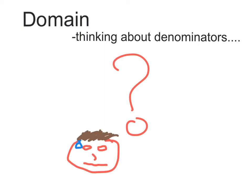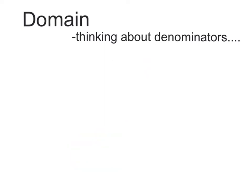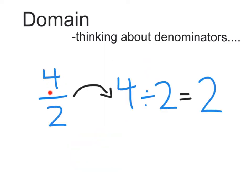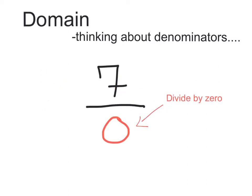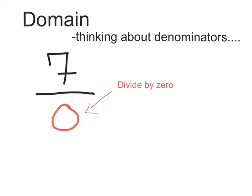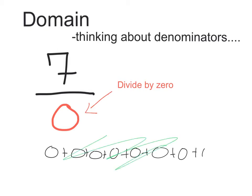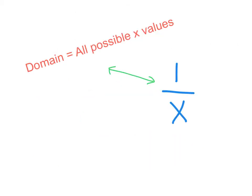So how does this relate to fractions? Since a fraction basically represents division — for example, 4 over 2 is the same as 4 divided by 2, which equals 2 — crazy things happen when the denominator equals 0. We can't divide by 0. If we had 7 divided by 0, how many times can I add 0 until it equals 7? 0 plus 0 plus 0 — it just doesn't make sense. Ask Siri or your calculator; they know.